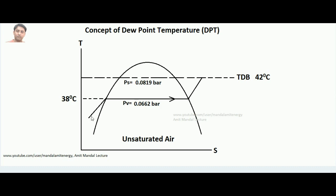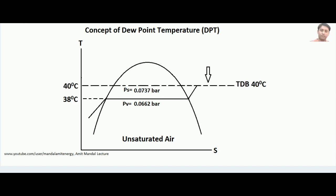On the T-S diagram, the vapor is reaching the boiling point, changing phase, and ultimately superheating to the dry bulb temperature. Now by applying cooling arrangements, I am lowering the temperature of air from 42 degrees centigrade to 40 degrees centigrade using a refrigerator or air conditioner. You can see that air is still unsaturated, because for 40 degrees centigrade the saturation pressure is 0.0737 bar, and the vapor pressure is still lower than this saturation pressure.